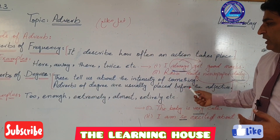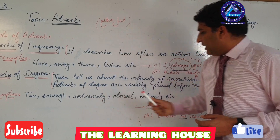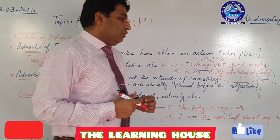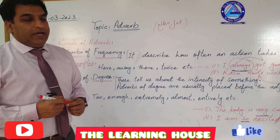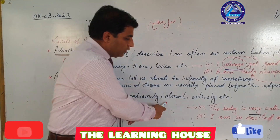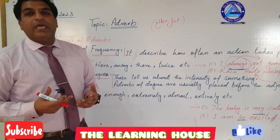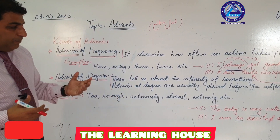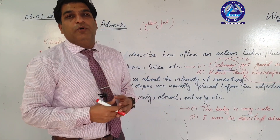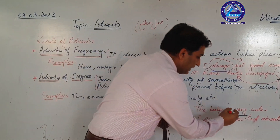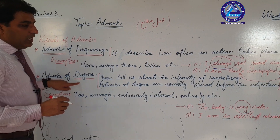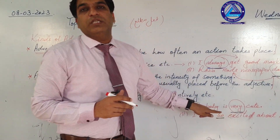Adverbs of degree tell us about the intensity of something. Adverbs of degree are usually placed before adjectives. Examples of adverbs of degree include: extremely, almost, entirely, enough, very. For example: 'The baby is very cute.' In this sentence, 'very' is the word that is called adverb of degree, which shows how much he is cute or beautiful.